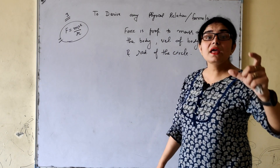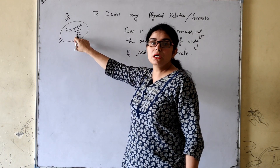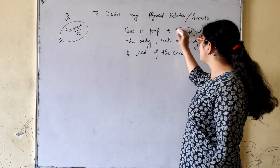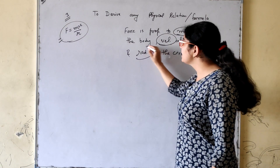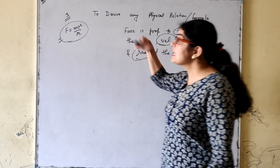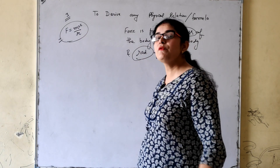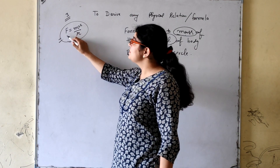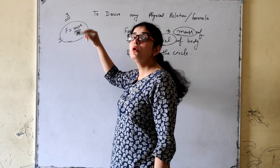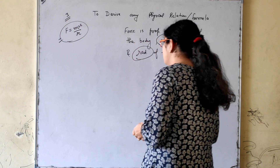The question will ask you to derive the formula for the force. In the question it will be given that force is proportional to the mass of the body, the velocity of the body, and the radius of the circle. We don't know how it depends — whether v is squared, or r is in the denominator. That is what we need to find out using dimensional analysis.